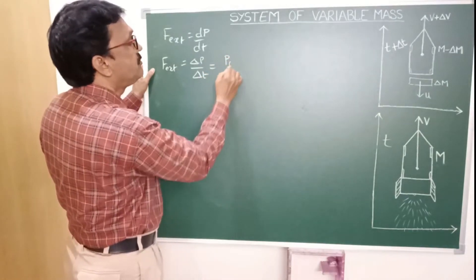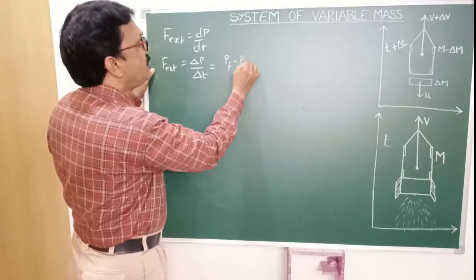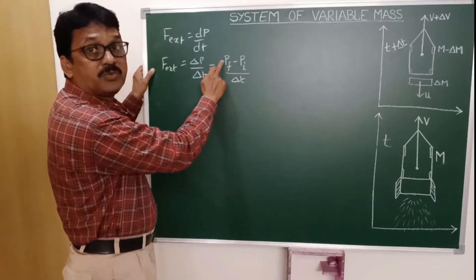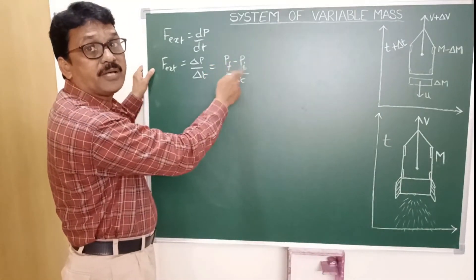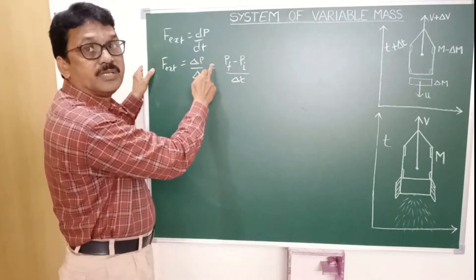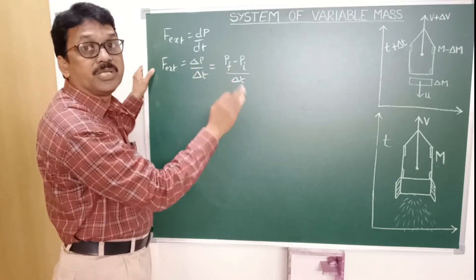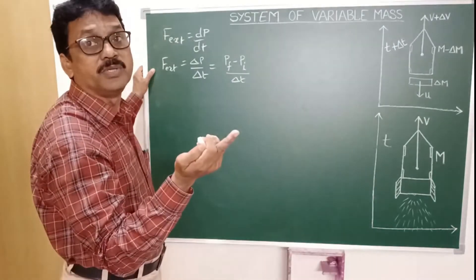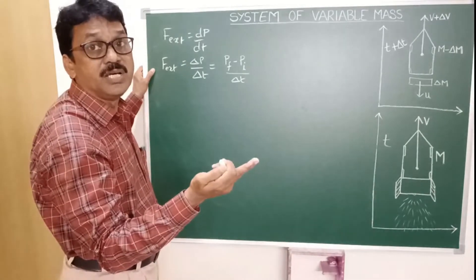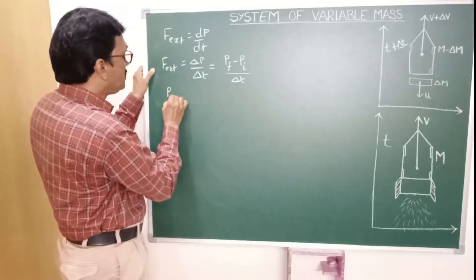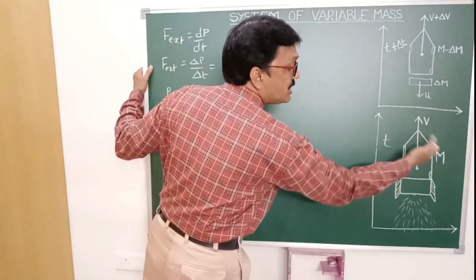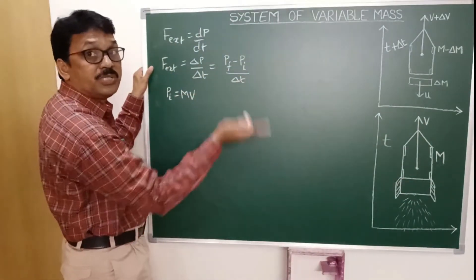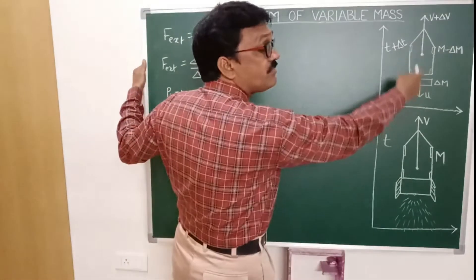So f external equals final momentum pf minus initial momentum pi, divided by delta t. Momentum means mass into velocity. The initial momentum pi is equal to the total momentum of the two masses combined, which is m into v.